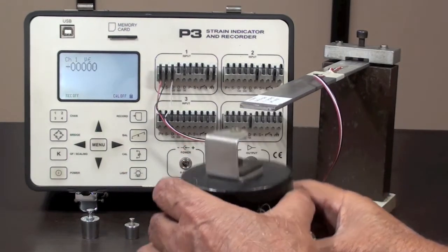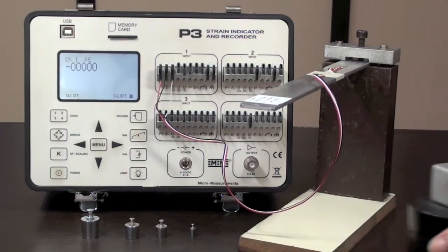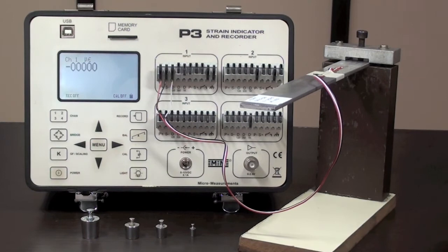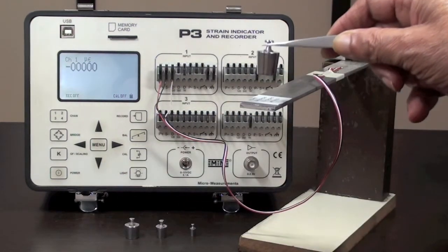To see how sensitive a strain gauge can be, the beam is loaded with one hundredth of this weight, 20 grams, which should give a reading of 11 microstrain.